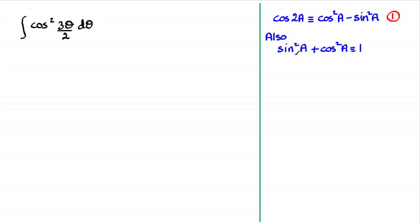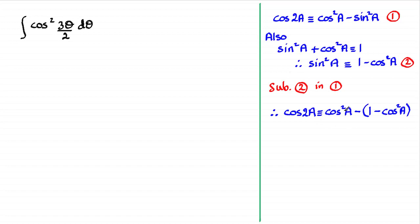Now what I'm going to do is make sine squared a the subject here. That's going to be easy if I take cosine squared a away from both sides. You're going to end up with sine squared a is identical to 1 minus cos squared a, and I've called that equation 2. And what I'm going to do is substitute equation 2 into equation 1. If you do that, you're going to get cos 2a is identical to cos squared a minus, and there's our substitution for sine squared a, there's 1 minus cos squared a.